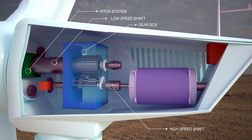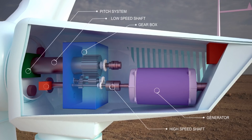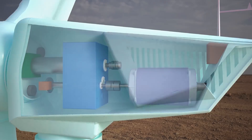The generator produces 60-cycle AC electricity. It is usually an off-the-shelf induction generator. The brake stops the motor mechanically, electrically, or hydraulically in emergencies.